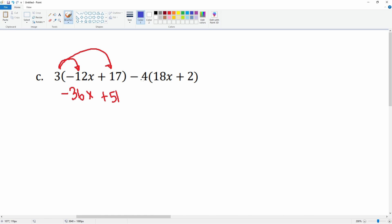Then you have the negative 4 here which is going to be multiplied to that 18x, which is negative 72x. And you have negative 4 times 2, that gets you negative 8. Now we're looking to combine some like terms.